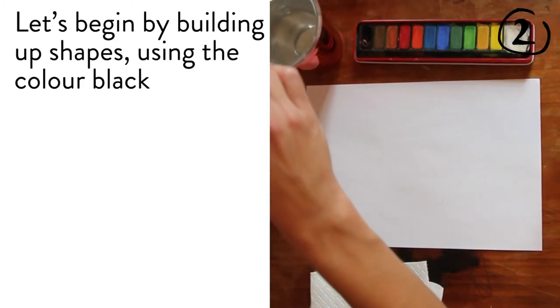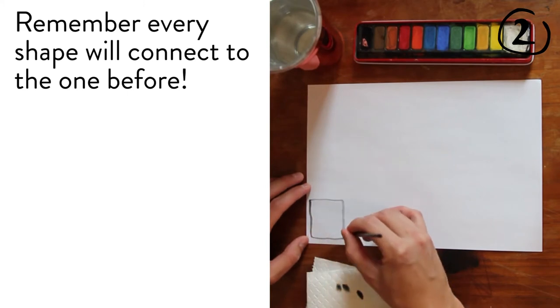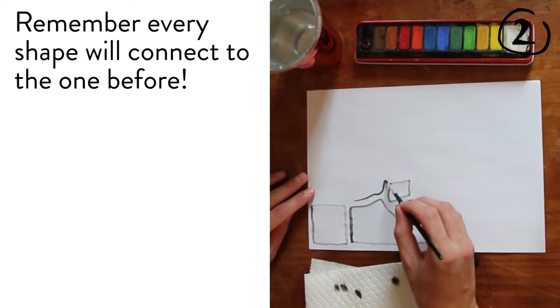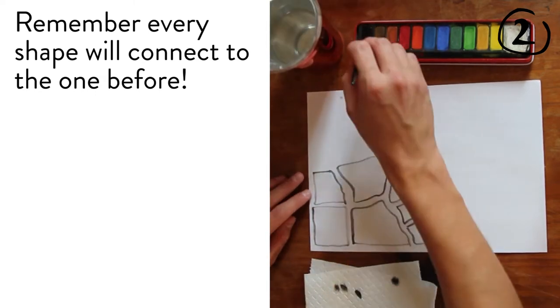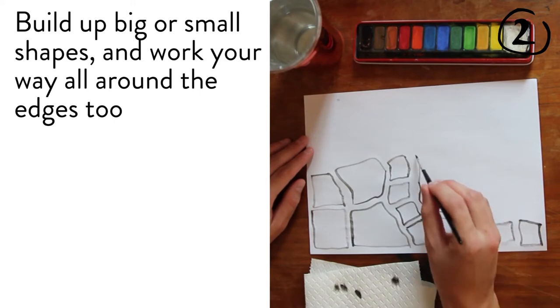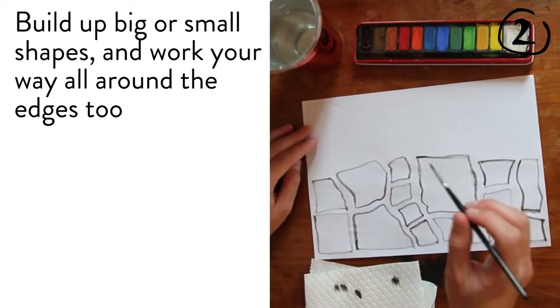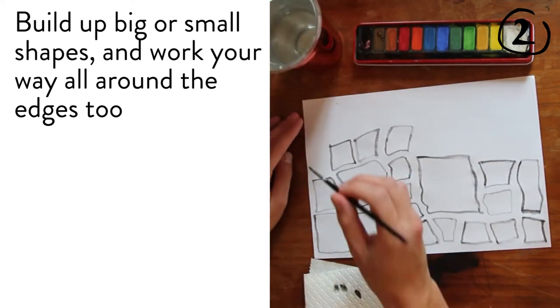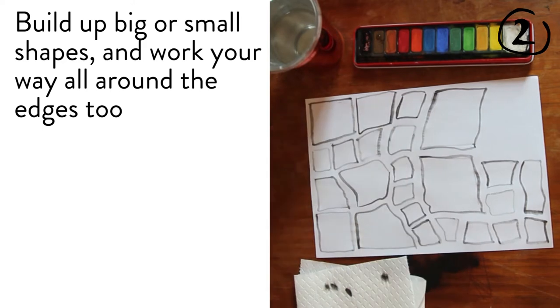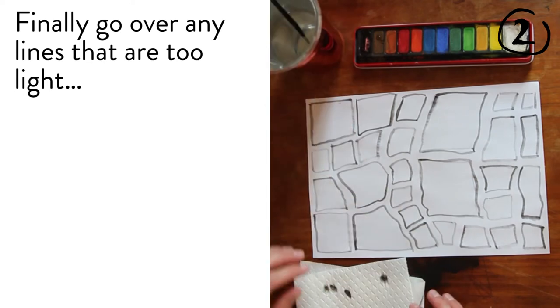Let's begin by building up shapes using the color black. Remember every shape will connect to the one before. Build up big or small shapes and work your way all around the edges too. Finally, go over any lines that are too light.